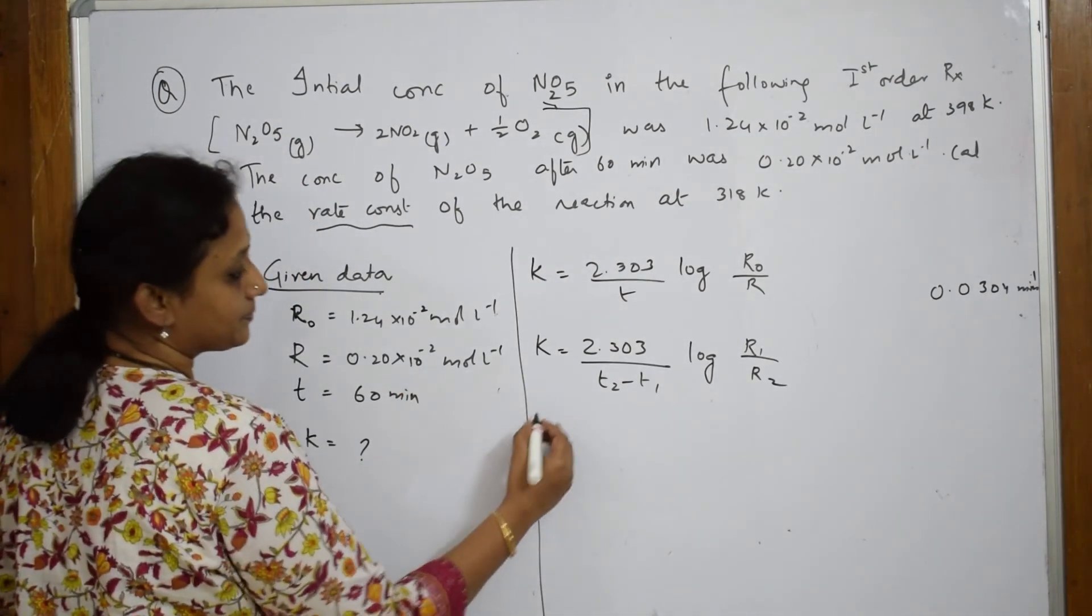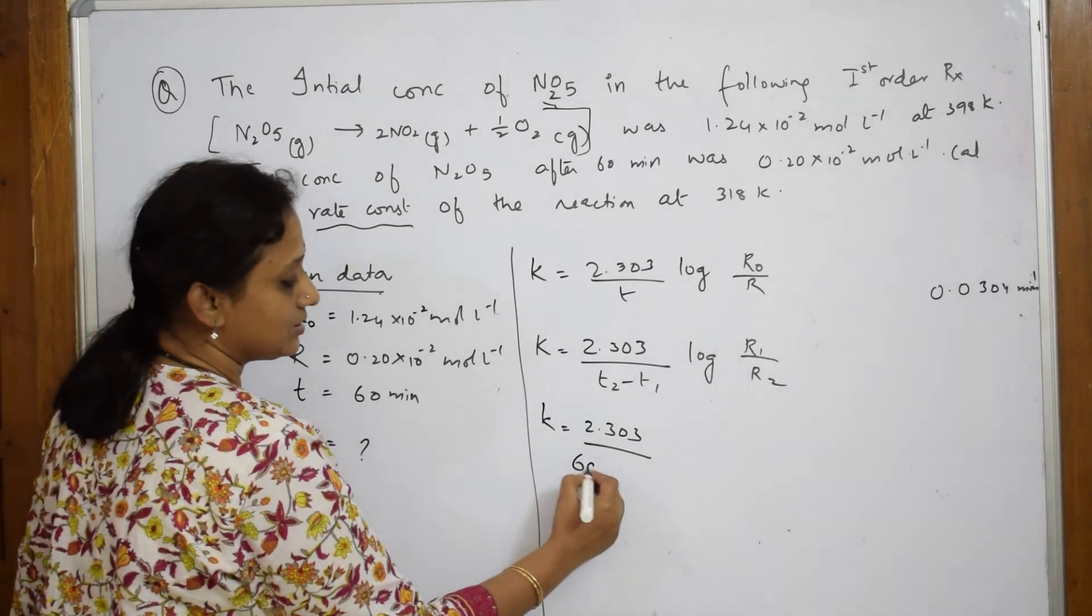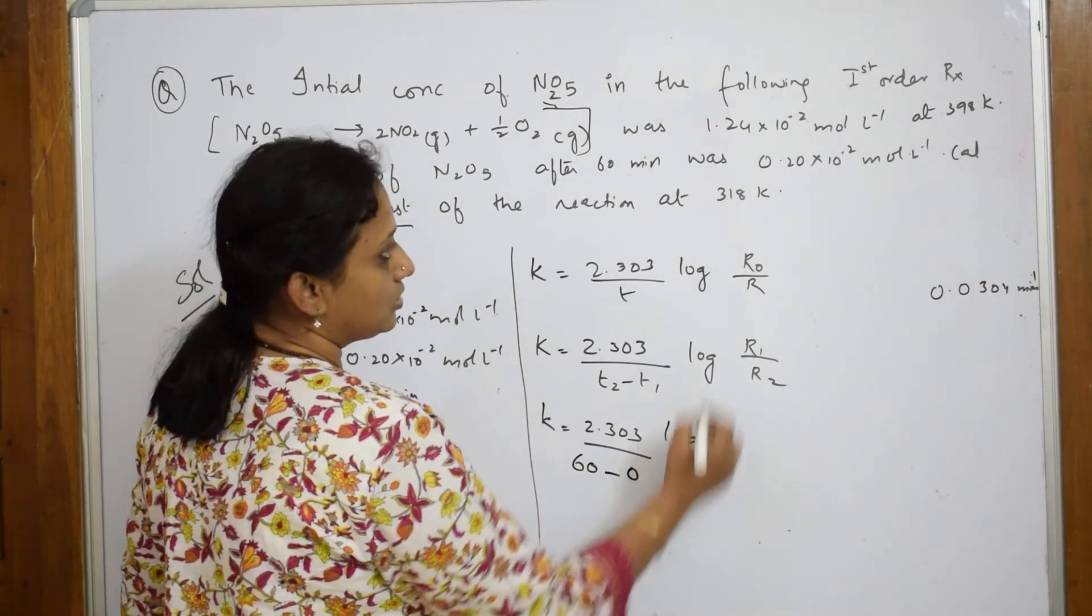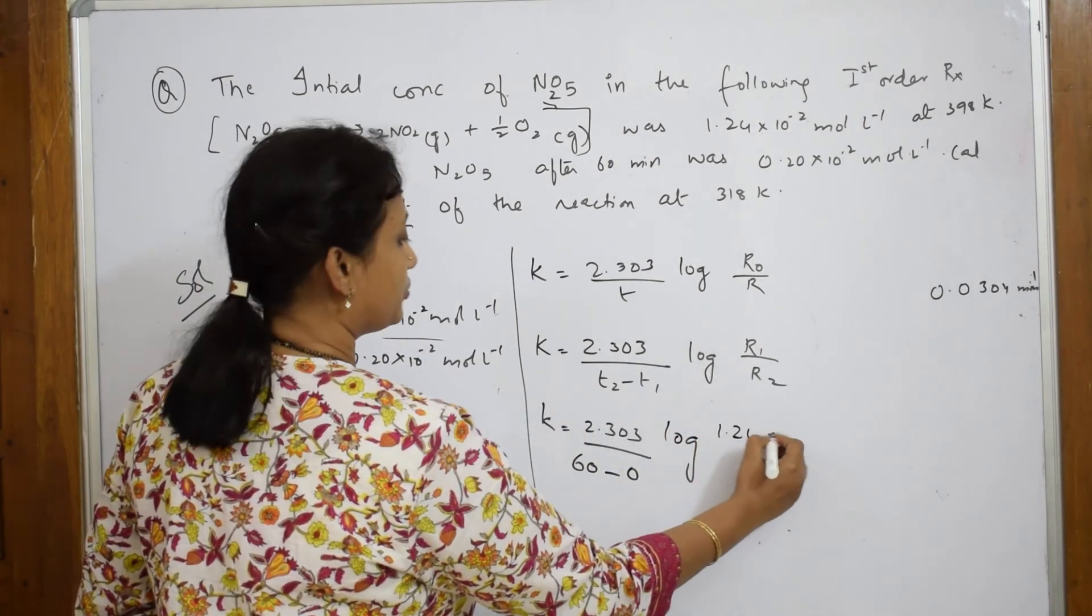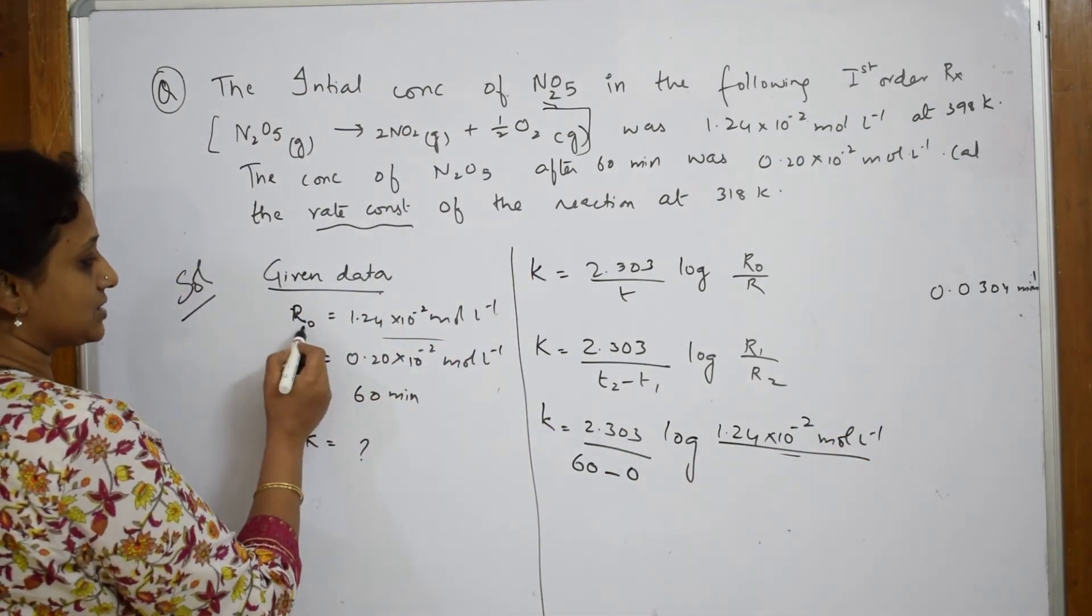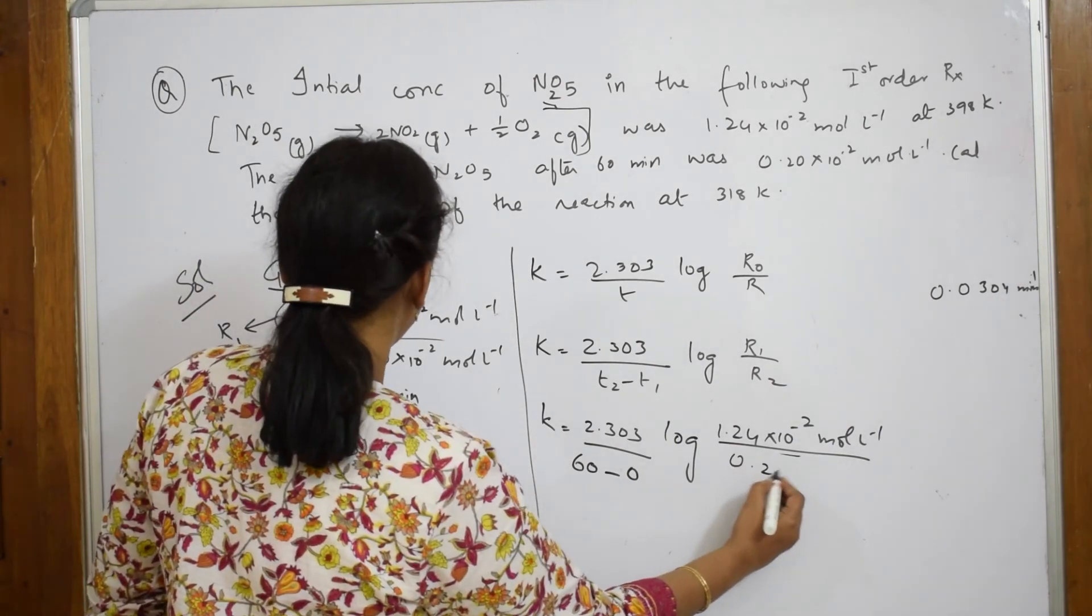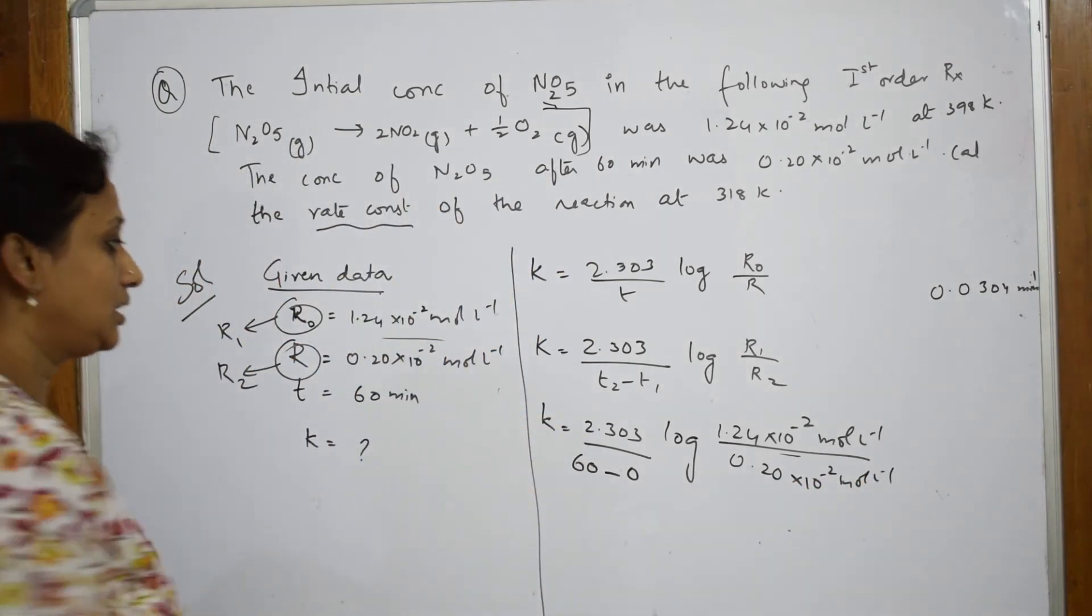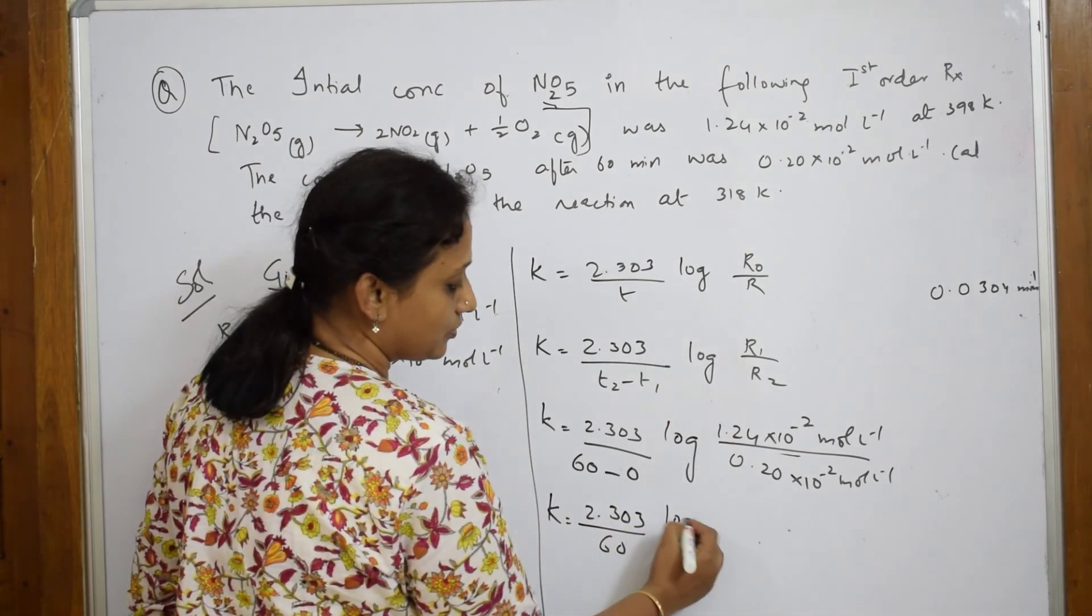Substitute the values, k is equal to 2.303 by your 60 minus 0. 0 to 60 is the limit, according to this formula and log, what did we get for R₀? This is 1.24 into 10 raised to minus 2 mole eta inverse. And what is the R₂ value we have got? This is instead of R₀, it is R₁. Here, instead of R, it is R₂. So substitute 0.20 into 10 raised to minus 2 mole eta inverse.